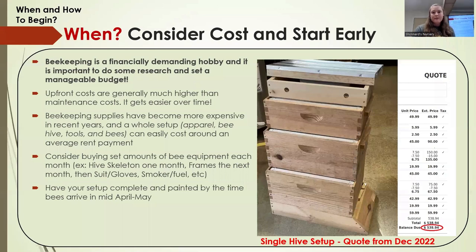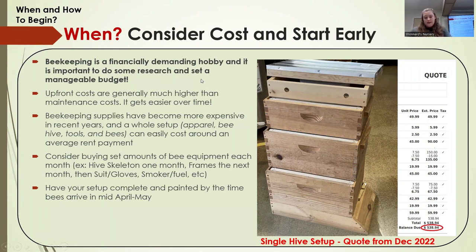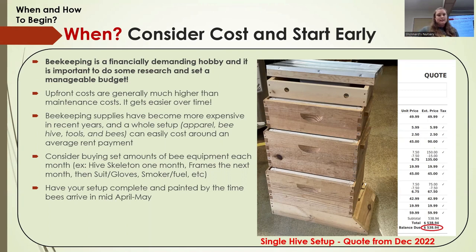When and how to begin: you have to consider costs and start early. It's January now — a great time to get started, collecting your gear, building, painting. The cost is definitely something to consider; it's been getting more expensive over the years, and upfront costs are usually where it hurts most. What I did was start really small — buy a hive box, buy a couple of frames, and continue until I have the entire setup. Keep in mind that package and nuke fees arrive anywhere between April and May, so make sure you have everything set up by then.